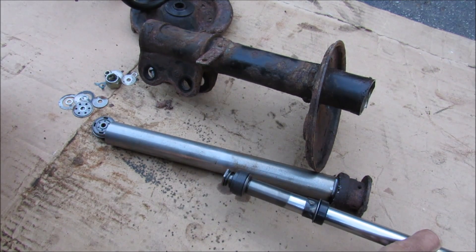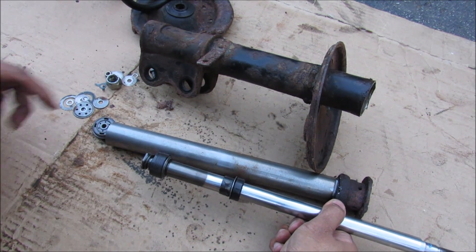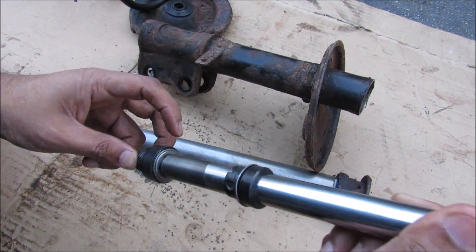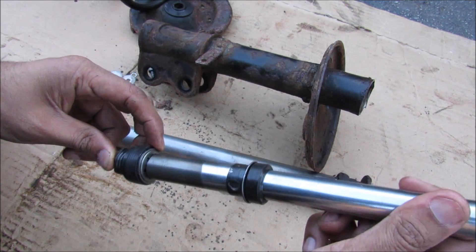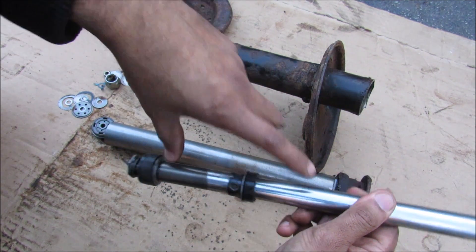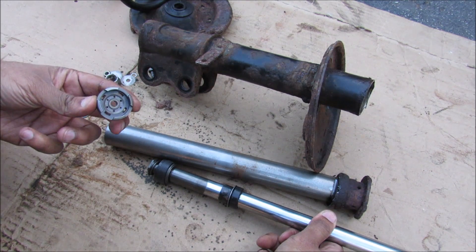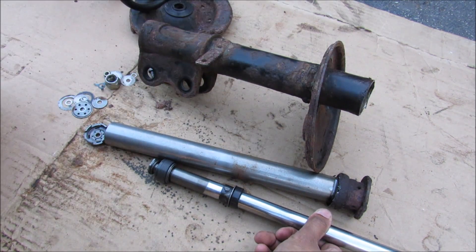When the piston goes into compression, the oil from here goes through these little orifice holes and fills up the chamber on this side. Some of that oil will go through the base valve and fill up the reserve chamber.